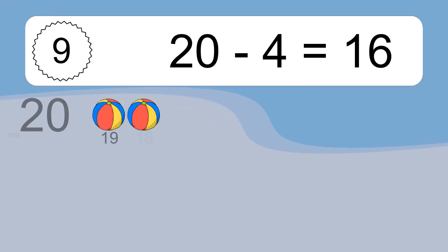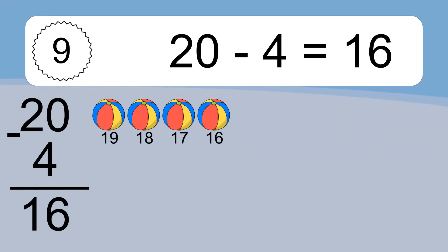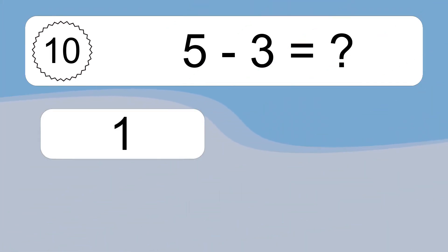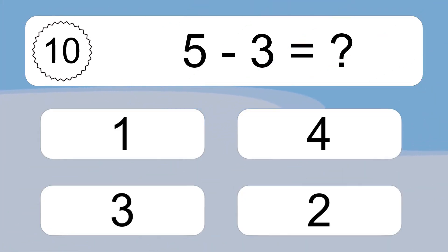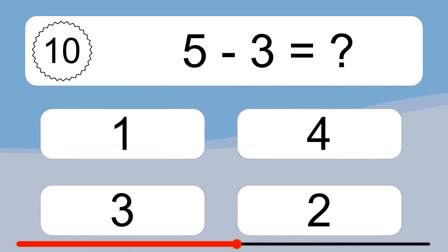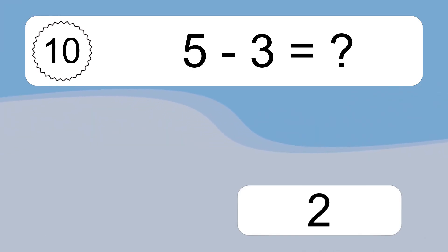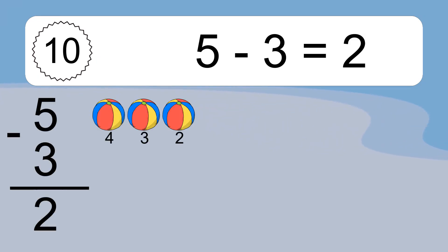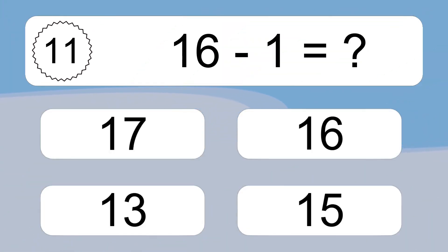Twenty minus four equals what? Twenty minus four equals sixteen. Let's count it: 19, 18, 17, 16. Five minus three equals what? Five minus three equals two. Let's count it: 4, 3, 2.